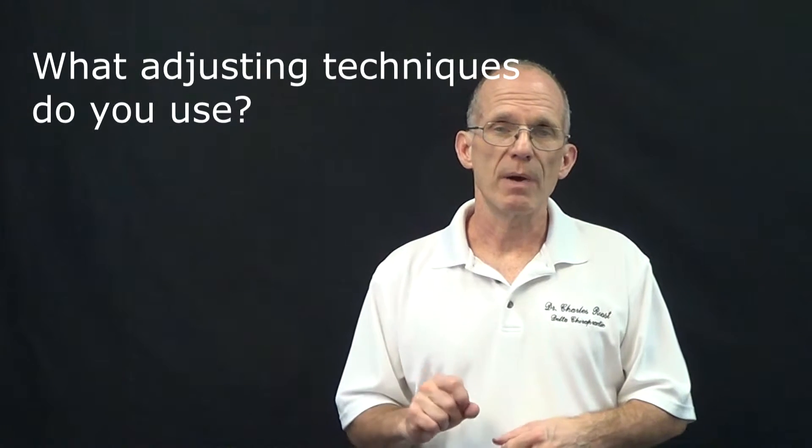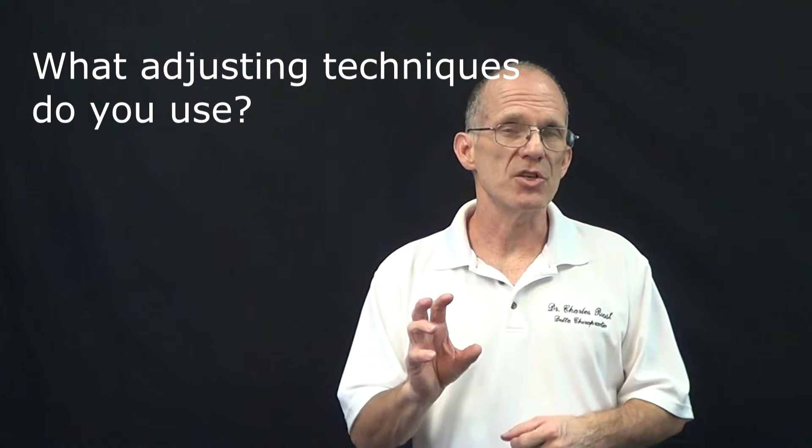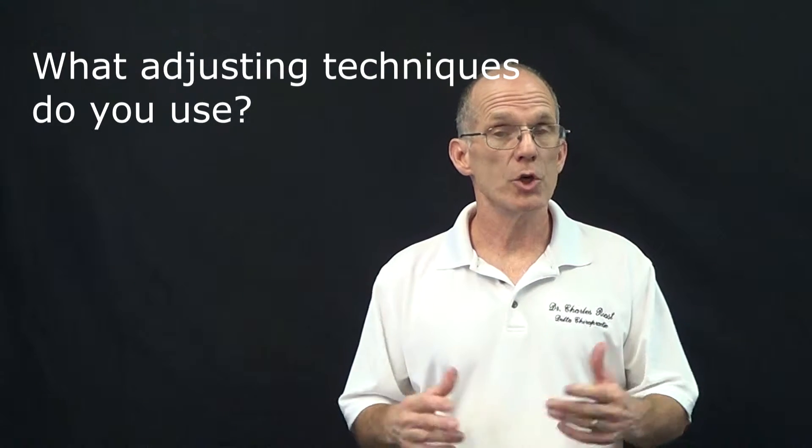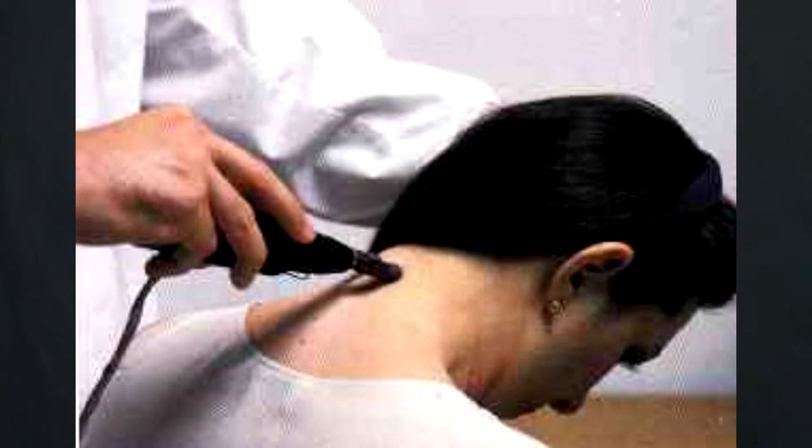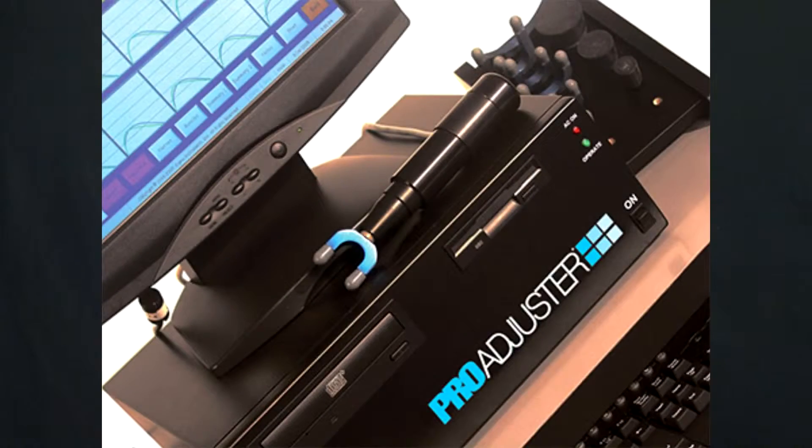Number two, a fair question might be to ask what techniques do you use in adjusting the spine? It's a good question because within the world of chiropractic there are a lot of different adjusting techniques. Everything from very light adjusting techniques where you hardly know you've even been touched to the traditional twisting and crunching quite strong adjustments and everything in between. There are instrument adjustments, there are computerized instrument adjustments, there are a lot of different techniques that chiropractors can use.